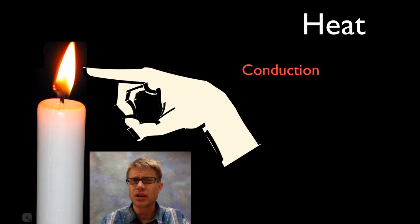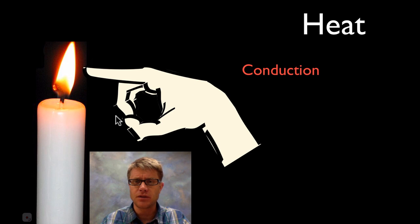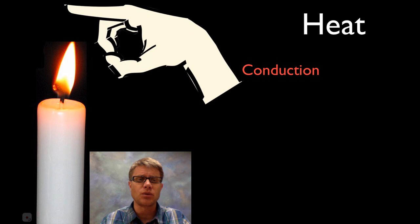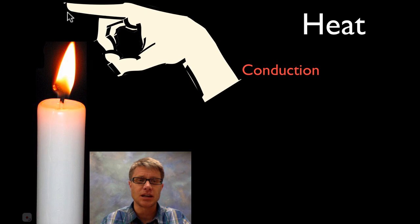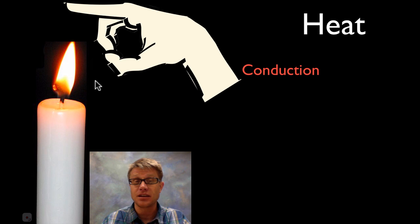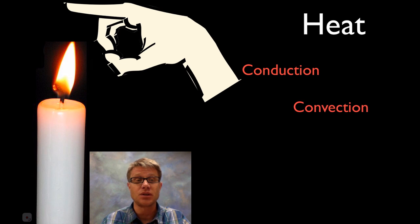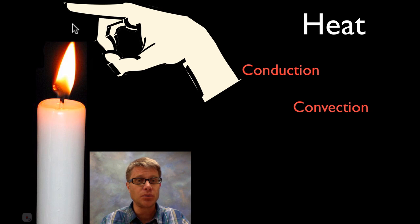There are other ways that we can transfer heat. If you sit here and you're not touching the actual flame, you're still going to feel a little bit of heat. But if you put your finger way above the flame, it's going to be way more painful up here than on the side. The reason why is the second way we can transfer heat, and that is through convection. Convection is the movement of fluids. The fluid that's actually heating up your finger is the air — it's getting really hot, hot air rises, and so it's going to heat you up way up at the top.